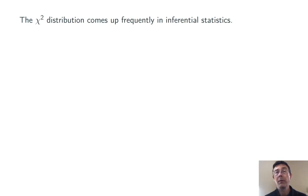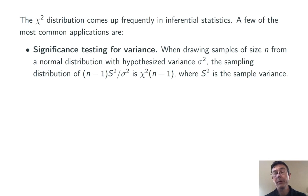The chi-squared distribution comes up all the time in inferential statistics. Here's a few of the most common places that we'll encounter it. First of all, significance testing for variance. When drawing samples of size n from a normal distribution with some hypothesized variance, σ², the sampling distribution of (n-1)s²/σ² is going to be χ²(n-1), where s² is the sample variance. So the idea there is that we're comparing sample variance to population variance under a null hypothesis.